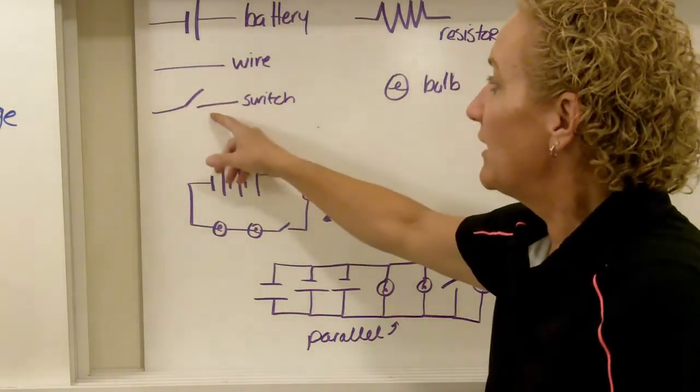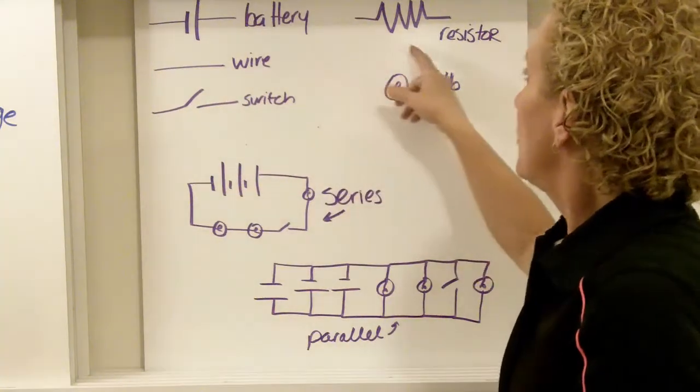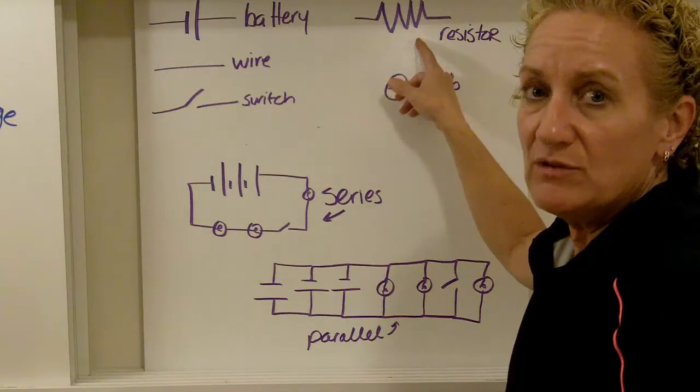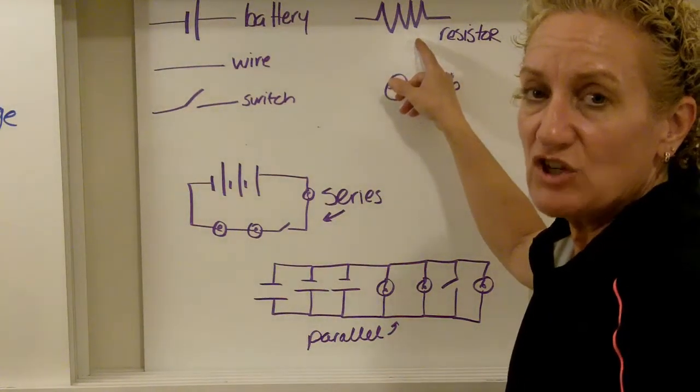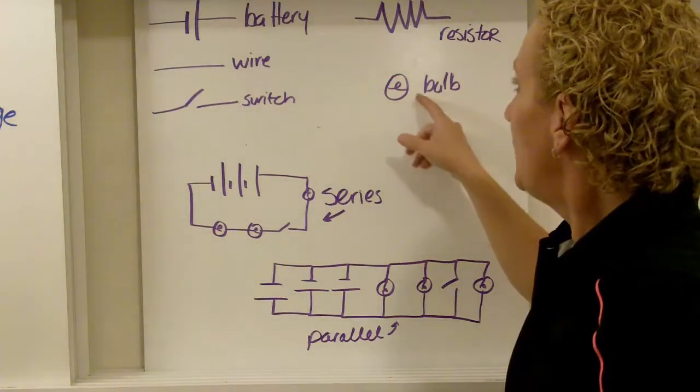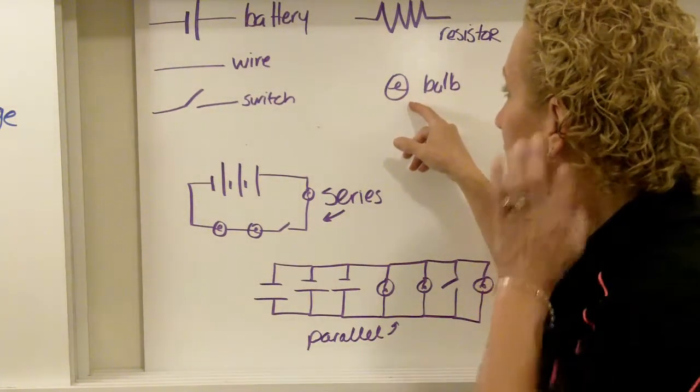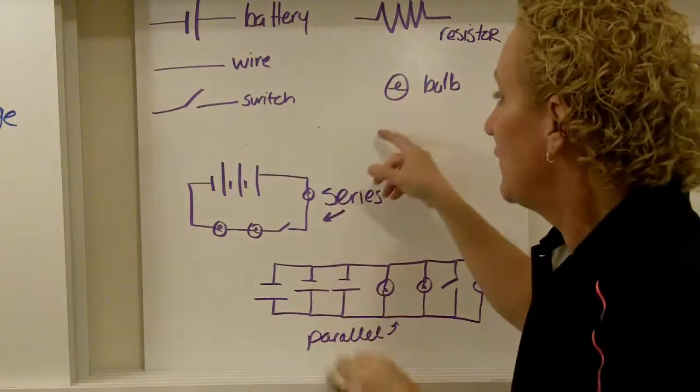A switch is a single line with a break in it. Resistor looks like this little squiggly thing. Notice it's like V's or W's. It's not like S's. It's sharp points. And a light bulb is just a circle with a squiggle in it. It's a specific kind of resistor. That's how it works. It resists the change. It resists the flow of electrons.